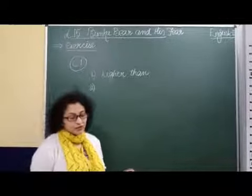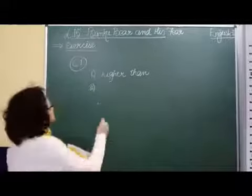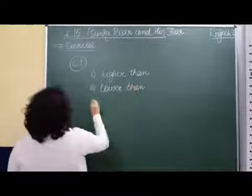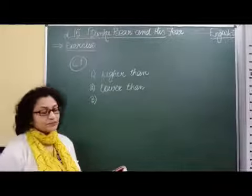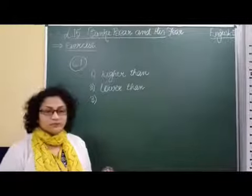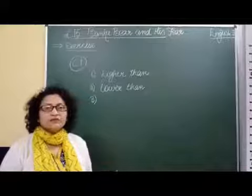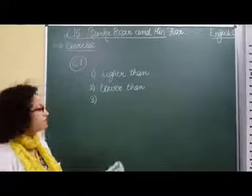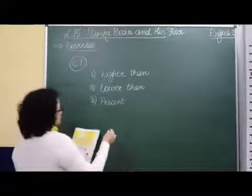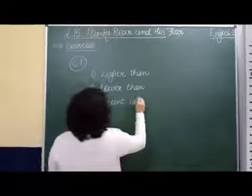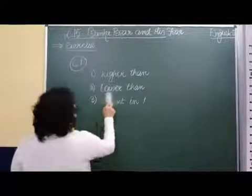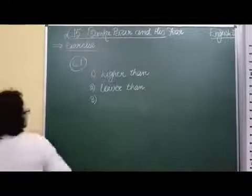Next is below. Below means lower than that. Number three is between. Between means present in the middle — between two persons or two things. You may not write 'present' as it is not in our textbook; just write 'in the middle.'